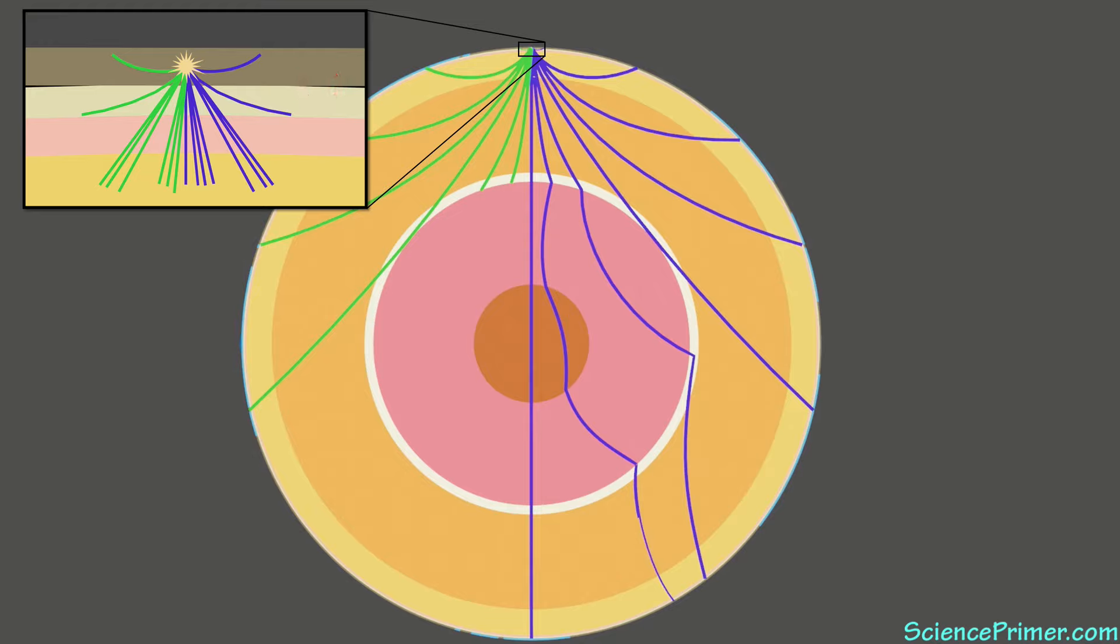The next discontinuity is the partially molten Asthenosphere. This shows up as another change in velocity and as a weakening of the S waves.